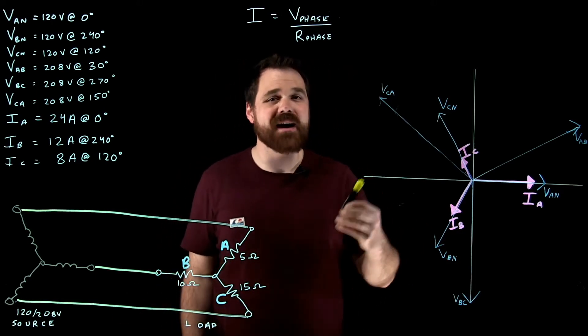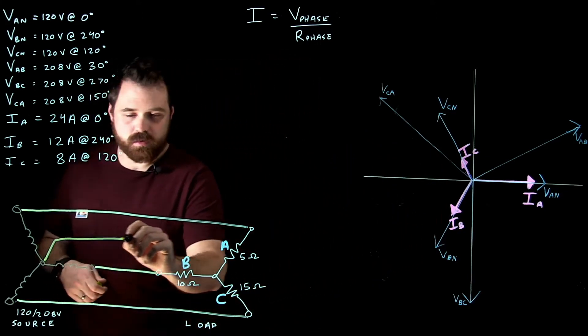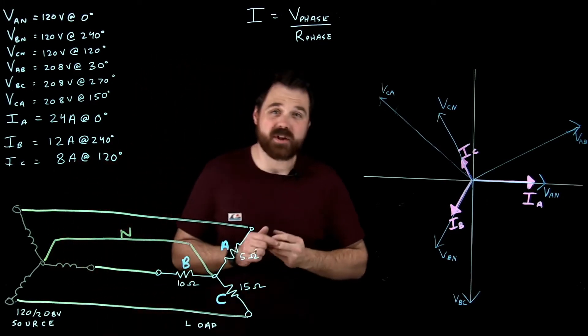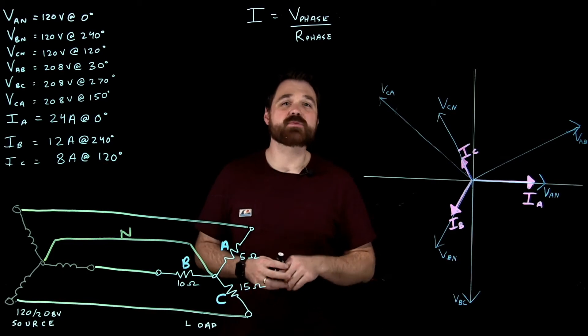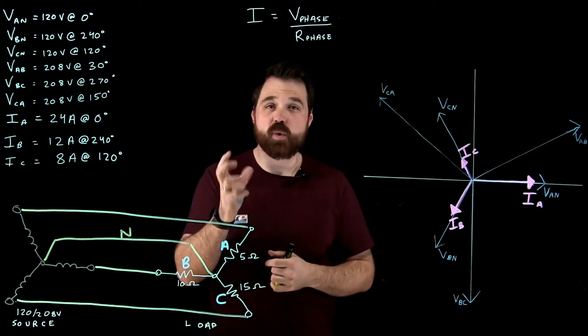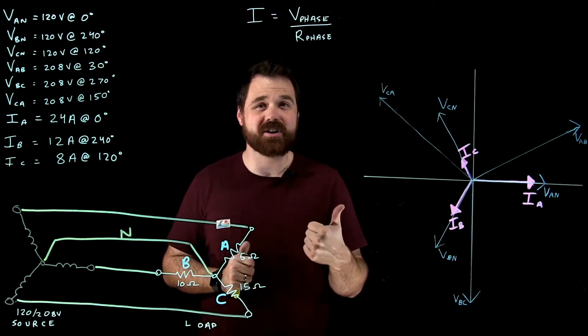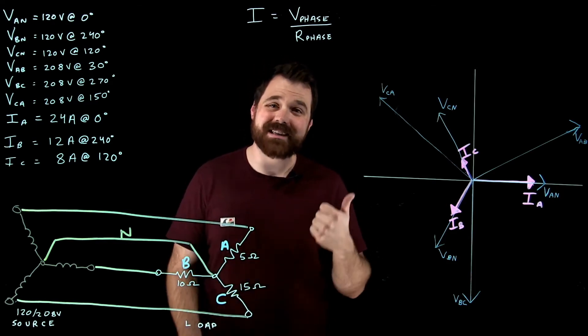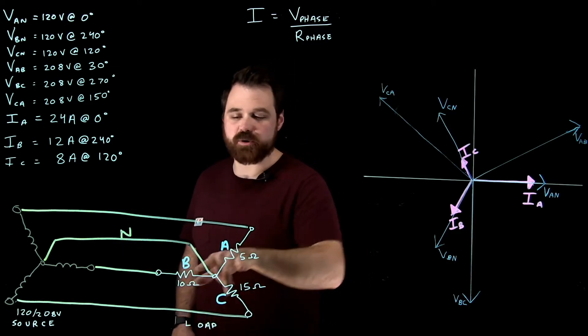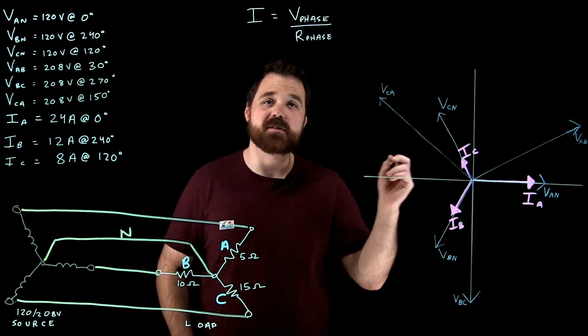we require that neutral conductor. And flowing on that neutral is what we call the unbalanced load. So in an unbalanced Y load, you need a neutral, and it is going to carry the unbalanced current. It's also going to maintain the system voltages. Without that neutral, it wouldn't be 120, 120, 120. They'd be all over the place, and it would be very dependent upon the load.